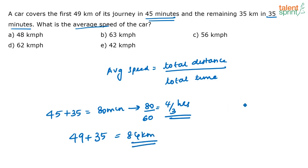What is the average speed? The average speed is the total distance divided by the total time, or 84 divided by 4/3, which equals 84 times 3/4. Solving this gives 63 kilometers per hour.